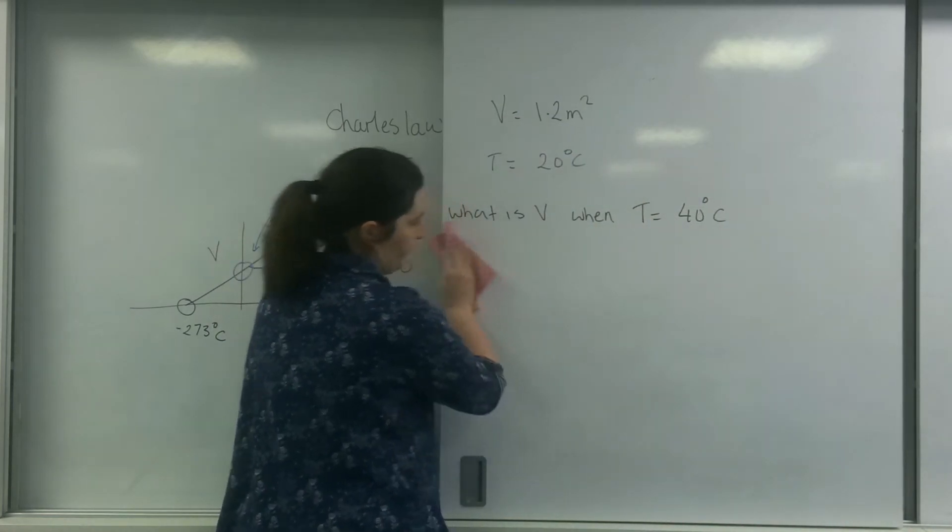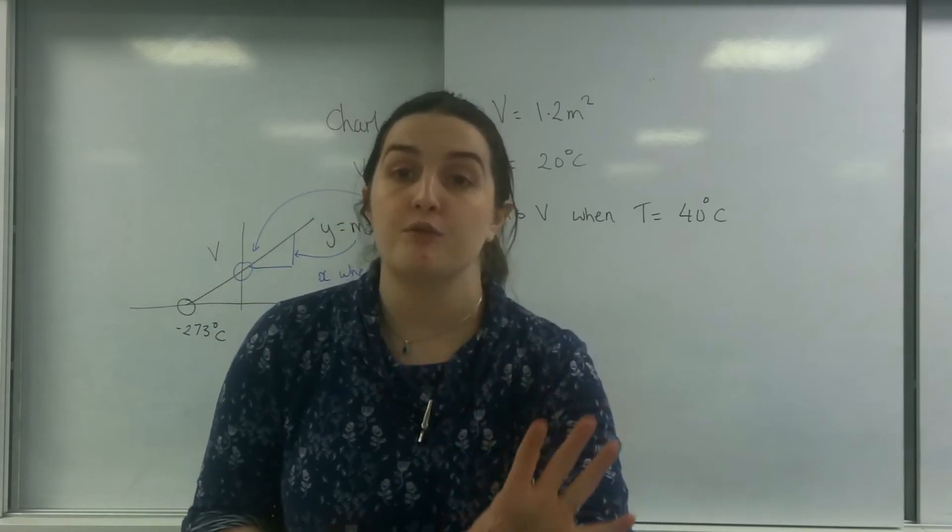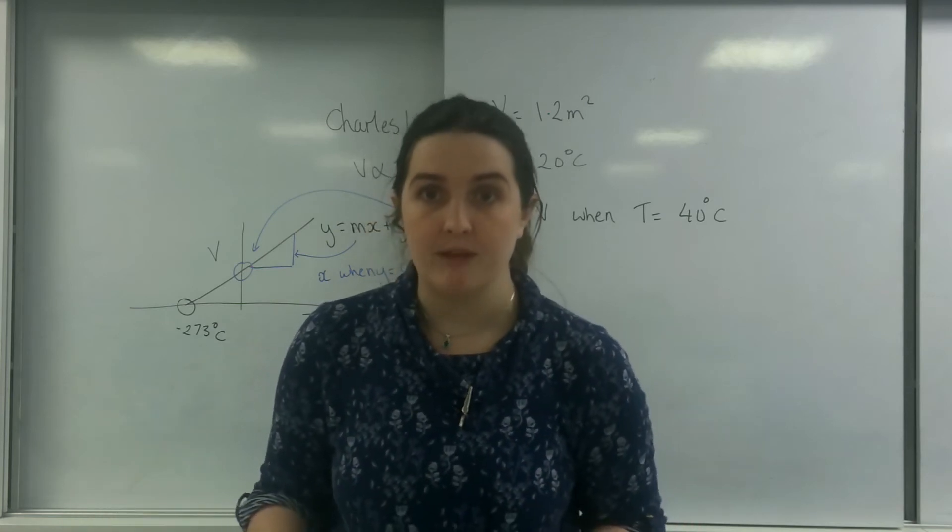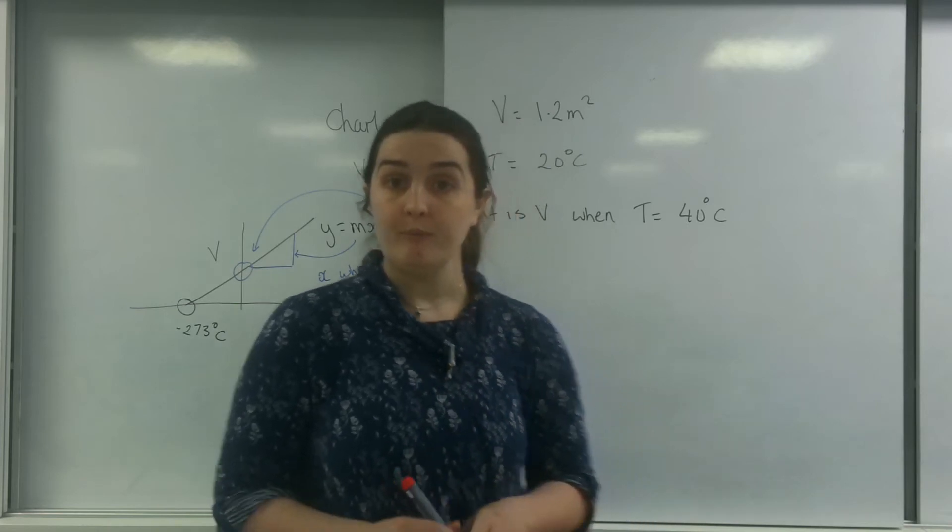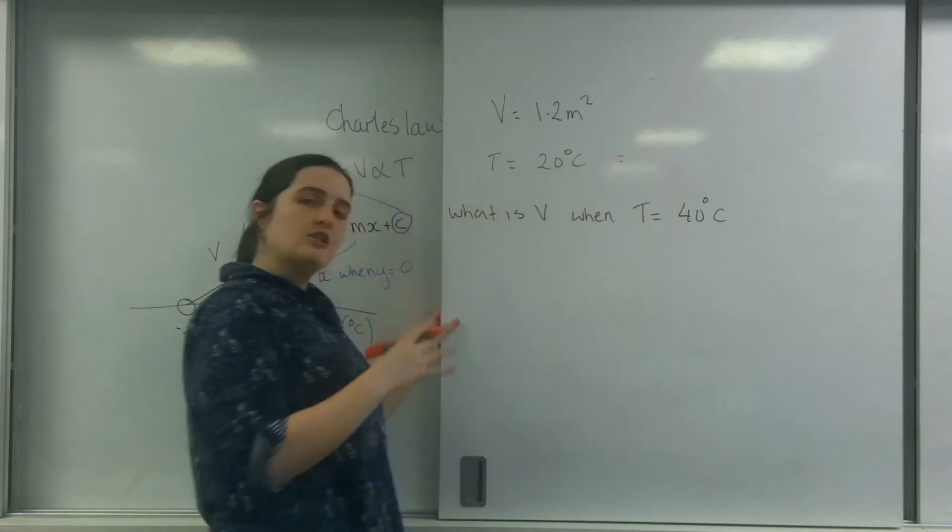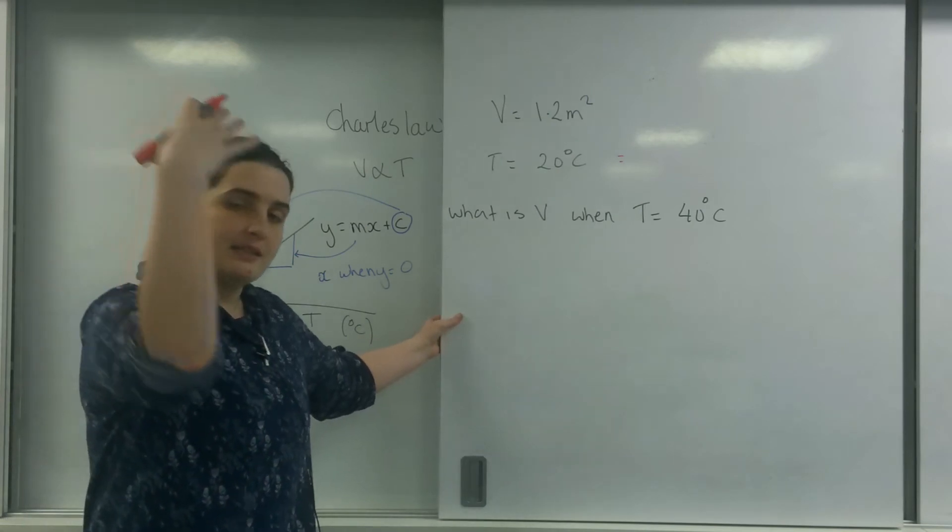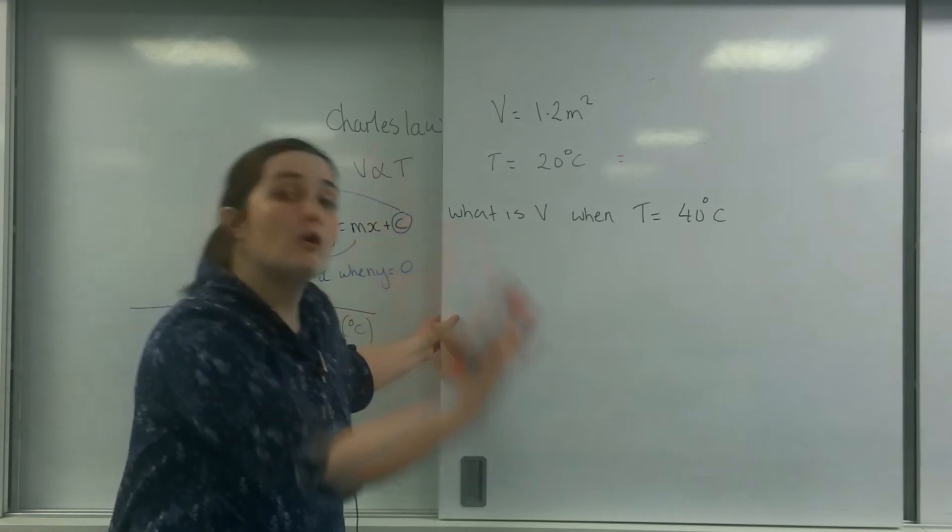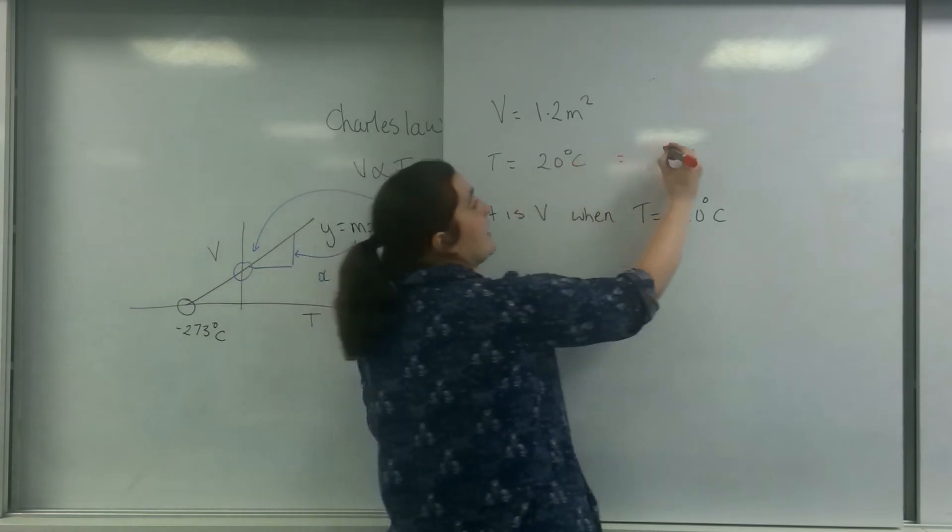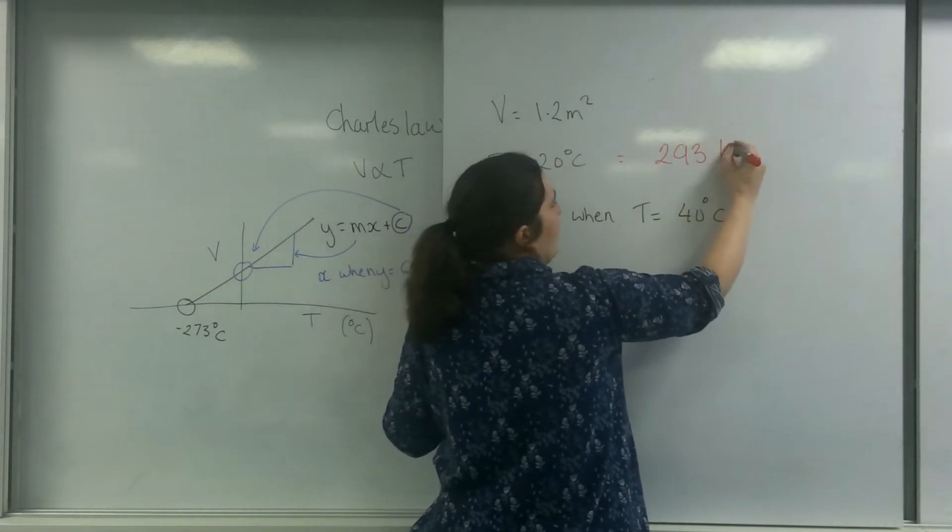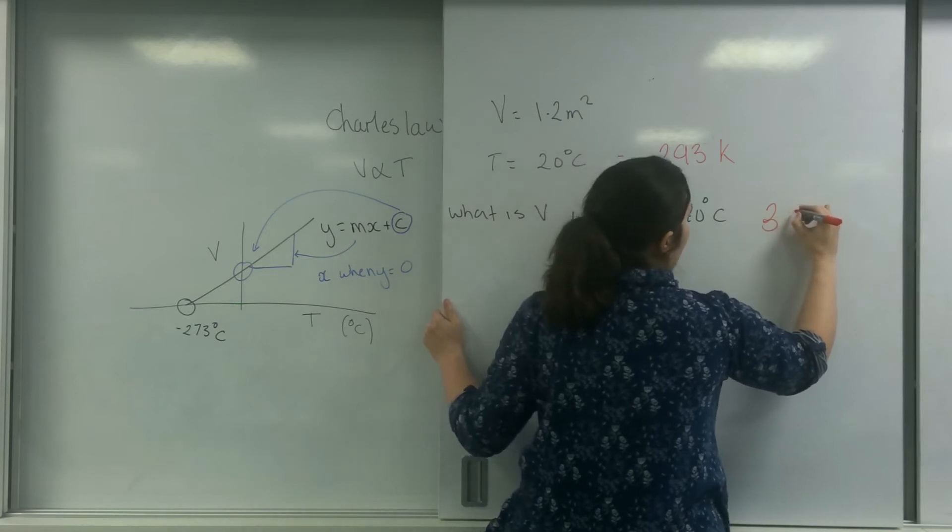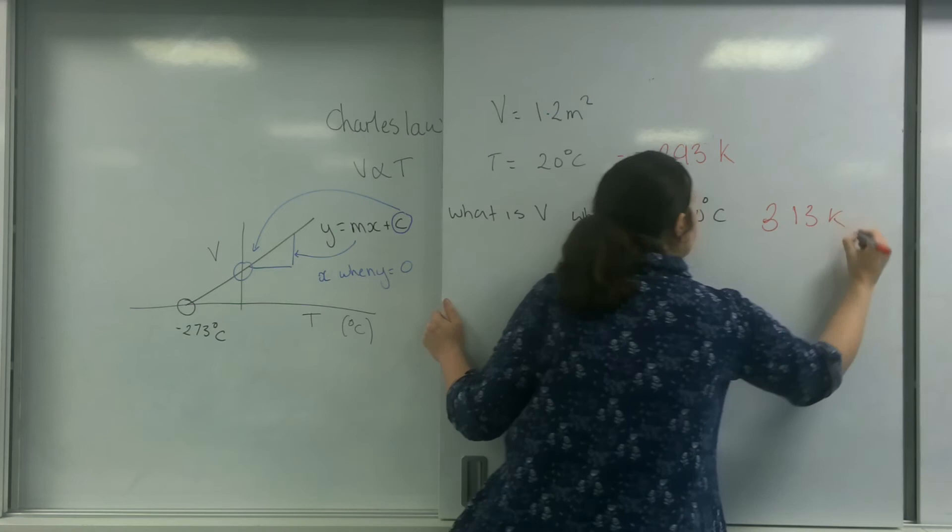So let's put this into Kelvin. The first job you do when dealing with volume and temperature, you must convert any temperature to Kelvin. And if you're one of those students that is concerned, always convert any temperature to Kelvin. It will work for specific heat and latent heat too. So 20 degrees in Kelvin is, so minus 273 is zero Kelvin. Zero degrees C is positive 273 Kelvin. So 273 plus 20 is 293 degrees Kelvin. And 40 degrees C is going to be 313 Kelvin.